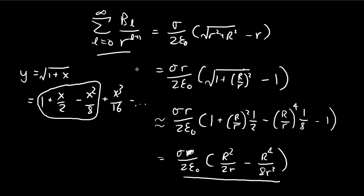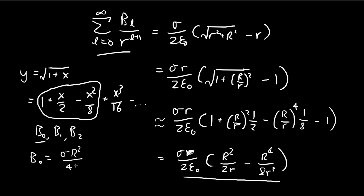We want to find the first three terms: B₀, B₁, and B₂. For B₀, the denominator is r to the power of 1, and comparing the constant we get B₀ equal to σR²/(4ε₀) — noting there's a factor of 2 in the denominator giving us 4ε₀.